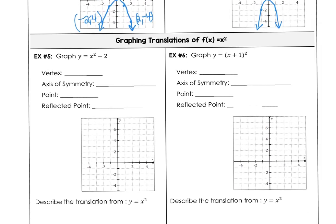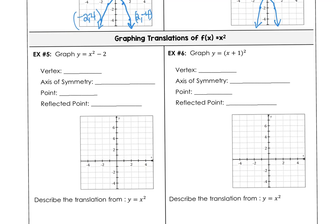Examples 5 and 6 will show translations when we move up and down the y-axis or left and right on the x-axis. For example 5, the vertex is going to be at 0, negative 2, since the minus 2 shifts our parabola 2 units down. The axis of symmetry is still at x equals 0. Substituting x equals 2: 4 minus 2 is 2, giving point 2, 2. Reflecting across the axis of symmetry gives negative 2, positive 2.